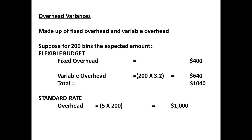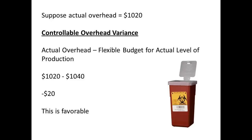Overhead variances are also calculated. We must remember that a standard rate of overhead can be determined from previous production and budgeted production. However, the overhead is made up of fixed costs and variable costs. The fixed budget will remain the same regardless of the units produced, but the variable part of overhead will alter according to the number of units produced. We call this a flexible budget. If the actual overhead was $1,020, but the flexible budget is $1,040, then the difference of negative $20 is considered favourable, since actual costs for overhead are less than expected costs. If the flexible budget level is then compared to the standard budget, then the result is seen to be unfavourable.